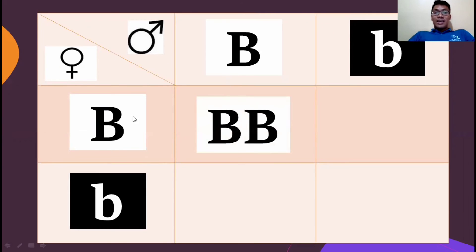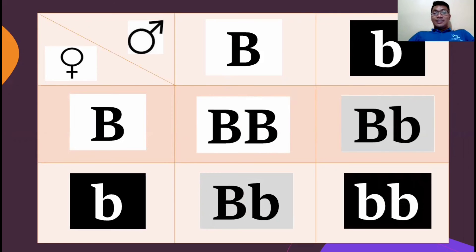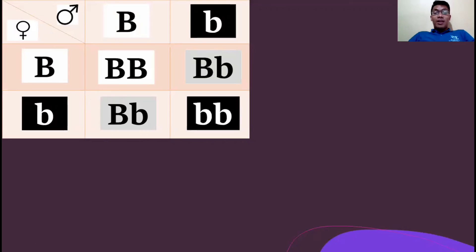So when we cross it, the capital B, we will have this result. Next we have capital B and small b. Third, capital B and small b. Then lastly, two small b. For the analysis, I typically use numbers or I numbered the cell from left to right then downward, just like this one.